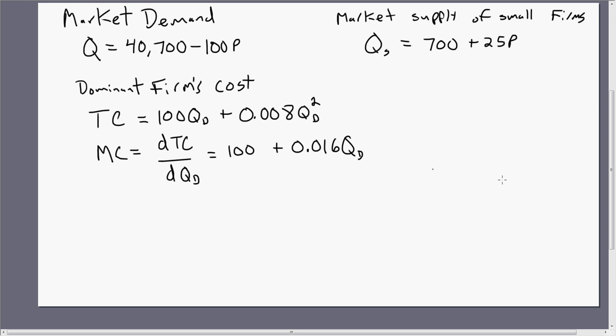This type of problem, you're going to be given three bits of information. You're going to be given the market demand curve. So this is the market demand curve, Q equals 40,700 minus 100P.